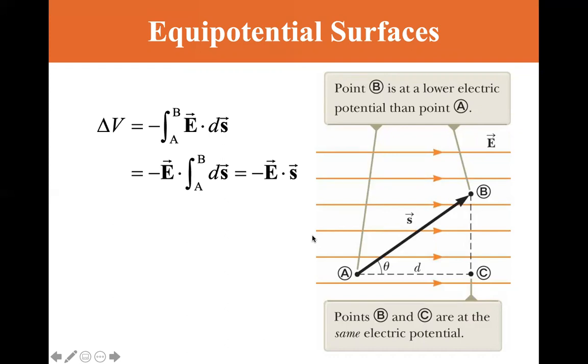Delta V is equal to the negative of the integral A to B of E dot D S. We can pull the E out because it's constant. Minus E dot with the integral of A to B D S is equal to minus E dot S. The change of electric potential is equal to Q delta V equals minus Q E dot D S.